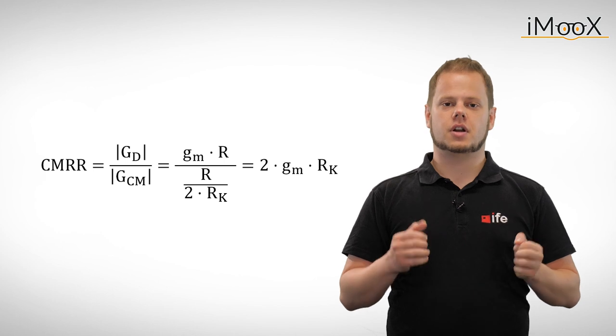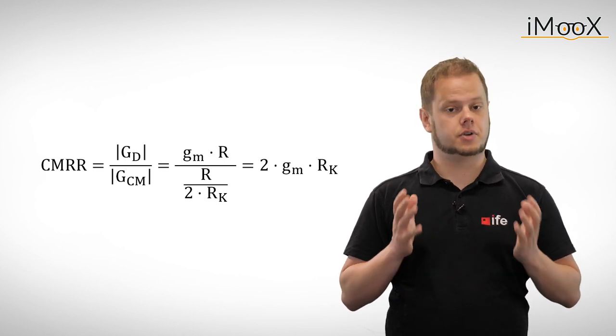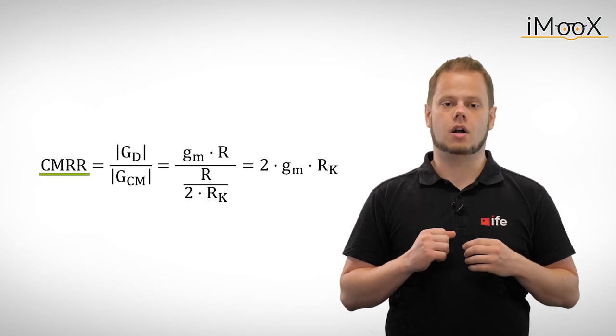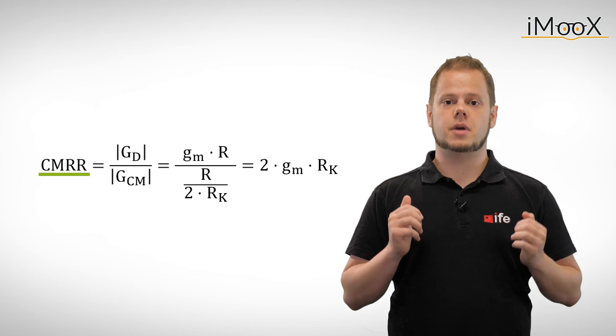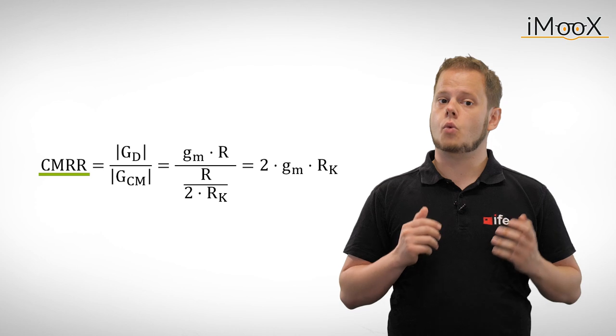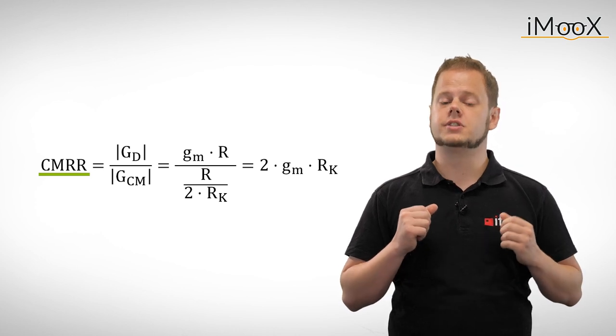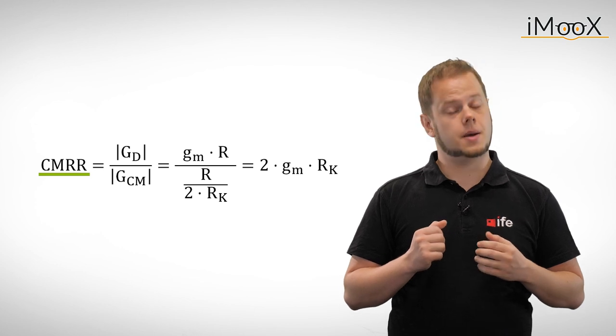An important characteristic for differential amplifiers is the common mode rejection ratio, or CMRR for short. The common mode rejection ratio is a measure of how well the amplifier can detect differences in input voltages while attenuating common mode signals. The higher the common mode rejection ratio, the better the amplifier.